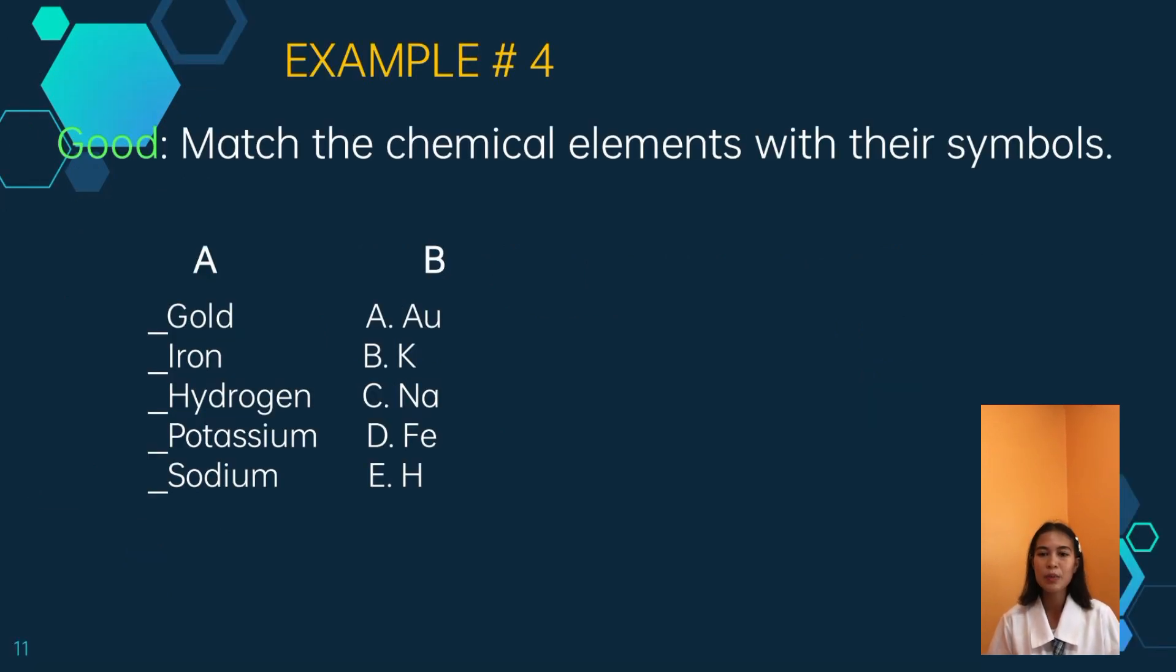For example, in column 1 is the chemical element, then it should be matched to the chemical symbols. For example, gold is AU, hydrogen is H, iron is Fe, potassium is K, sodium is Na.